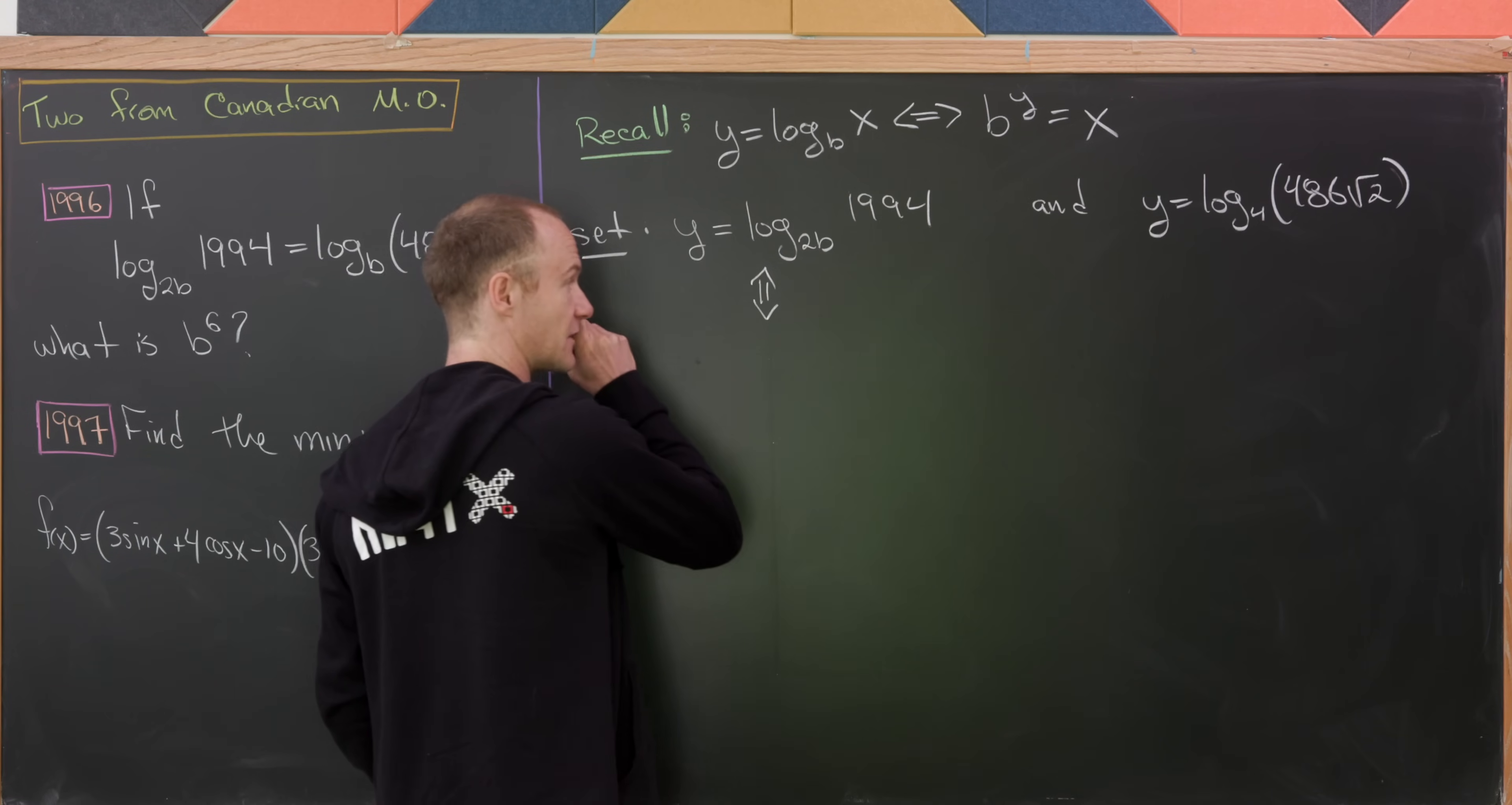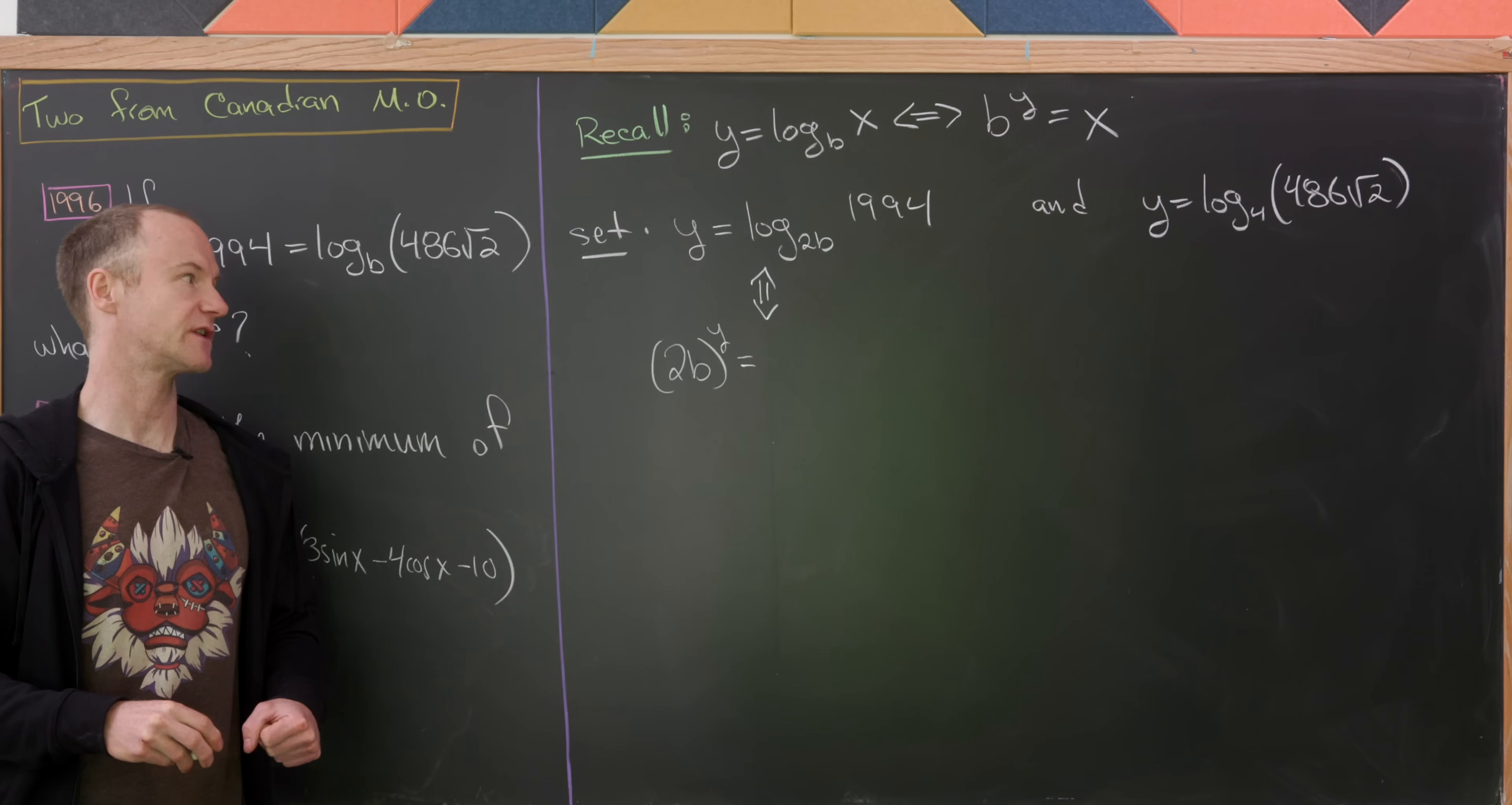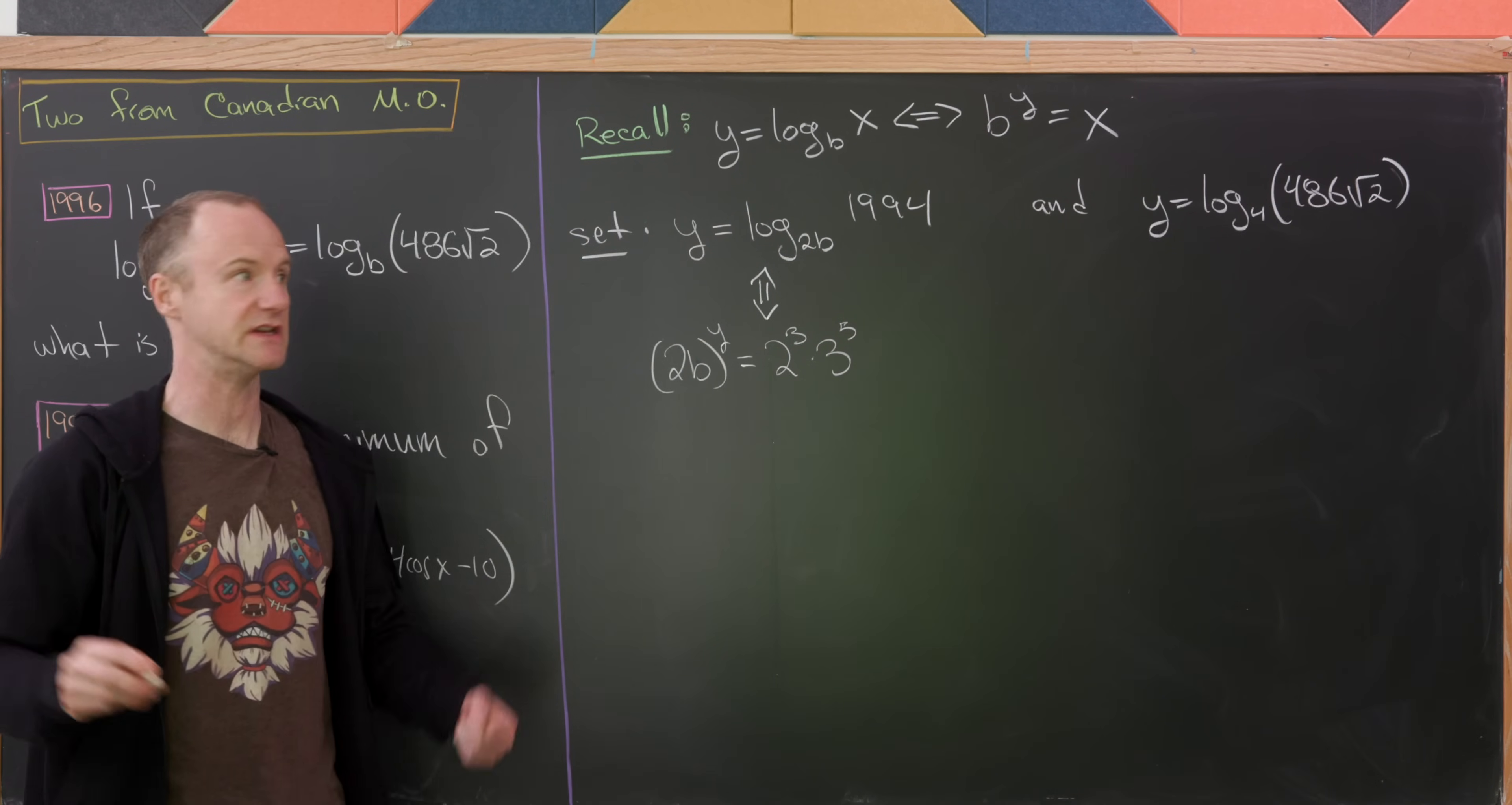So let's see what we get from this first one. We'll have 2b raised to the y power is equal to 1994. But I think here it'll be useful to factor 1994 into its prime factorization. So this is in fact 2 cubed times 3 to the 5th.